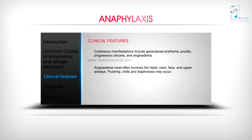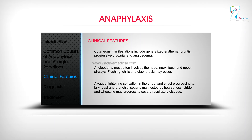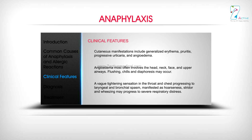Cutaneous manifestations include generalized erythema, pruritus, progressive urticaria, and angioedema. Angioedema most often involves the head, neck, face, and upper airways. Flushing, chills, and diaphoresis may occur. A vague tightening sensation in the throat and chest progressing to laryngeal and bronchial spasm, manifested as hoarseness, stridor, and wheezing, may progress to severe respiratory distress.